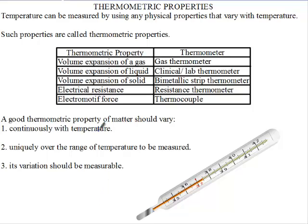A good thermometric property of matter should vary uniquely over the range of temperature to be measured. For example, the clinical thermometer measures temperature between 35 degrees and 42 degrees, and any temperature within this range can be measured using it.